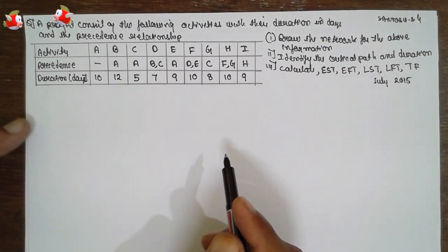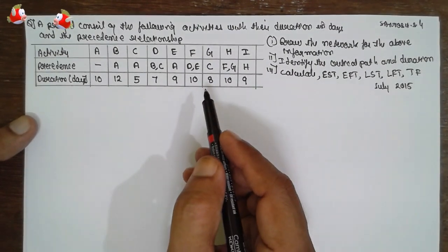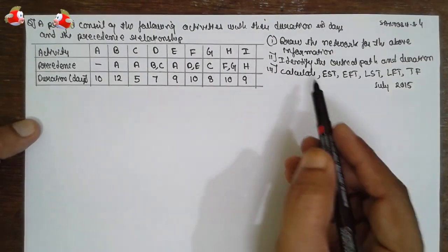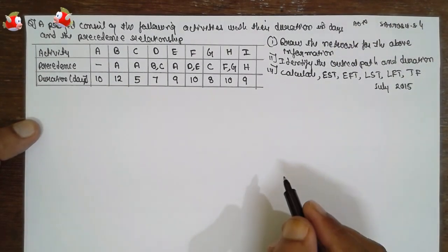I am Santosh Gaidanka. Today I am teaching you operation research, in that one critical path method. I am using AON method, activity on node method.